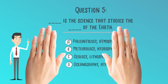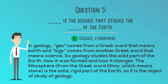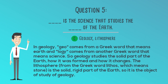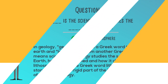The correct answer is C. Geology, lithosphere. In geology, 'geo' comes from a Greek word that means earth, and 'logi' comes from another Greek word that means science. So geology studies the solid part of the earth, how it was formed, and how it changes. The lithosphere, from the Greek word 'lithos' which means stone, is the solid, rigid part of the earth — so it is the object of study of geology.